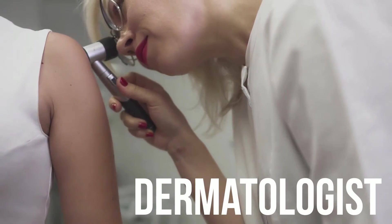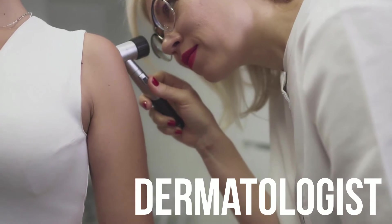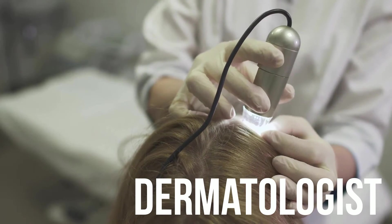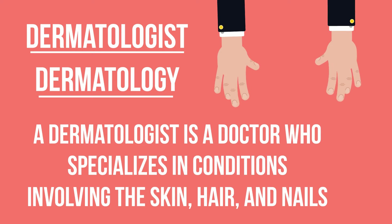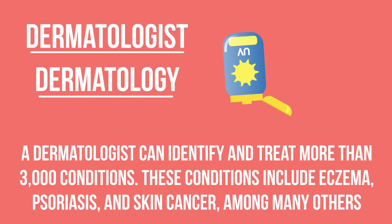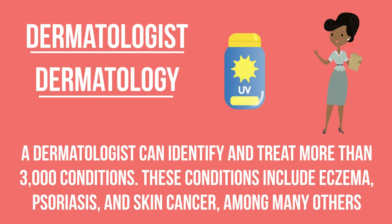Our next doctor type is a dermatologist, who works in the area of dermatology. A dermatologist is a doctor who specializes in conditions involving the skin, hair and nails. A dermatologist can identify and treat more than 3,000 conditions. These include eczema, psoriasis and skin cancer, among many others.